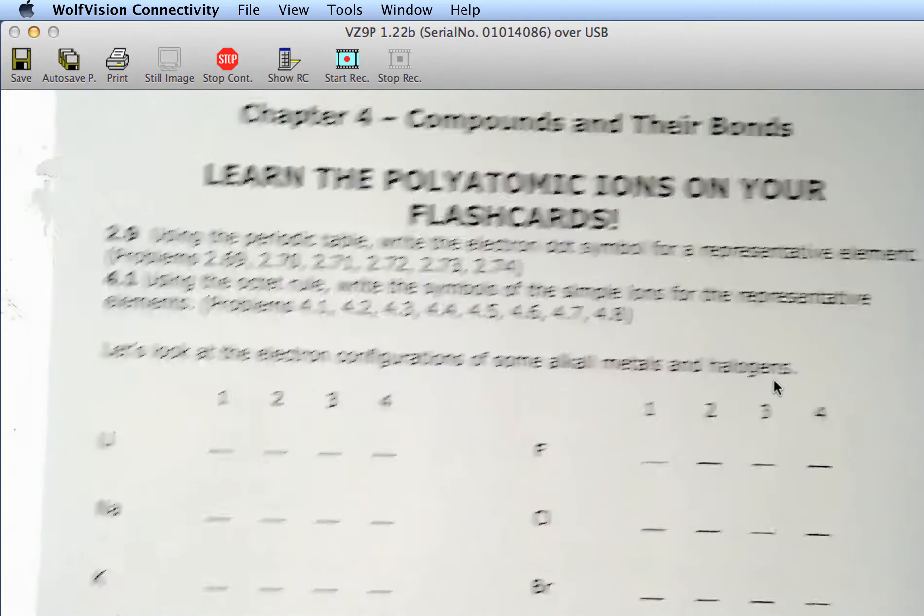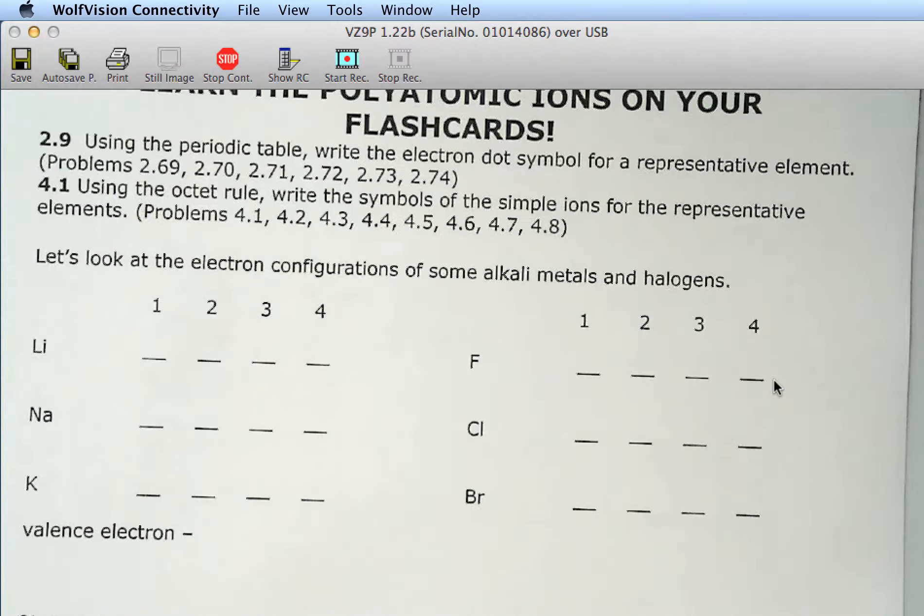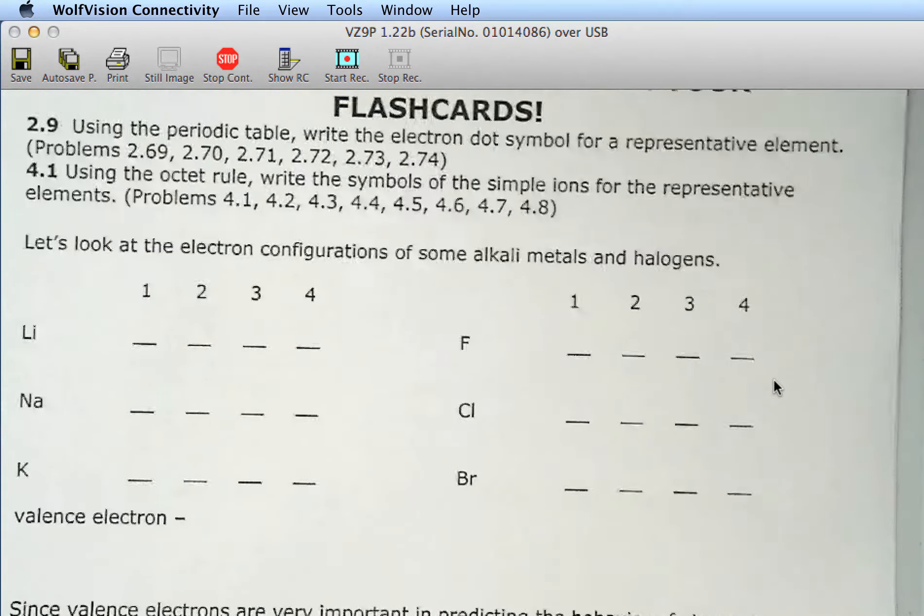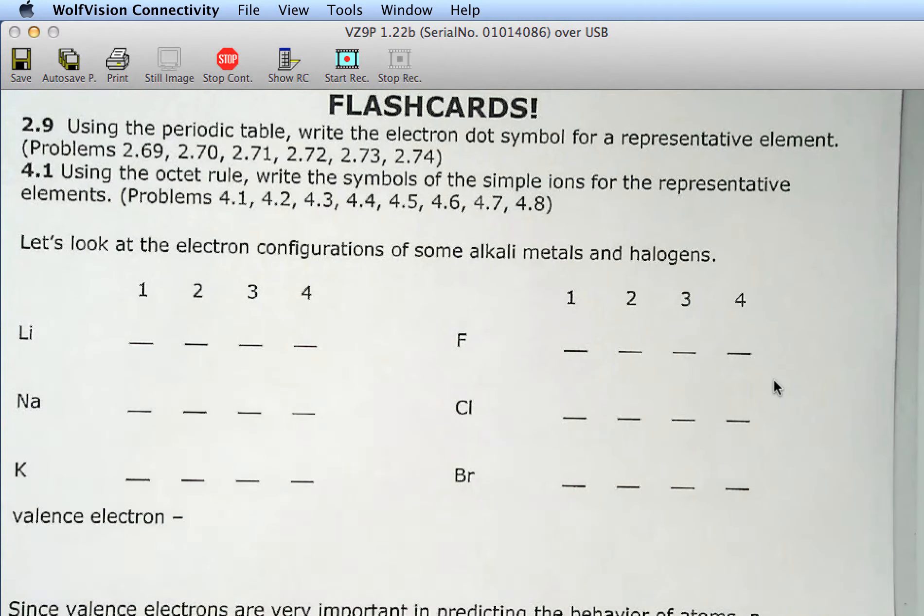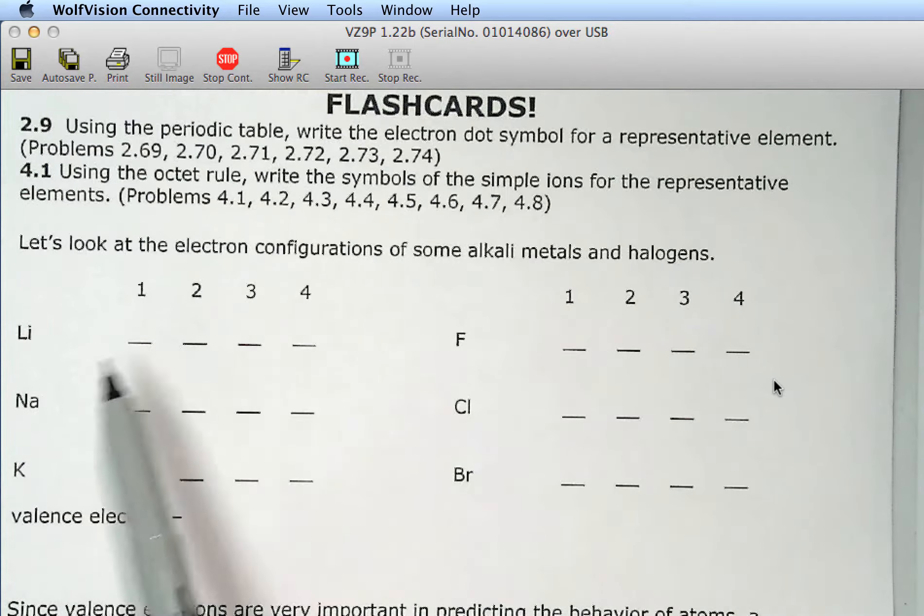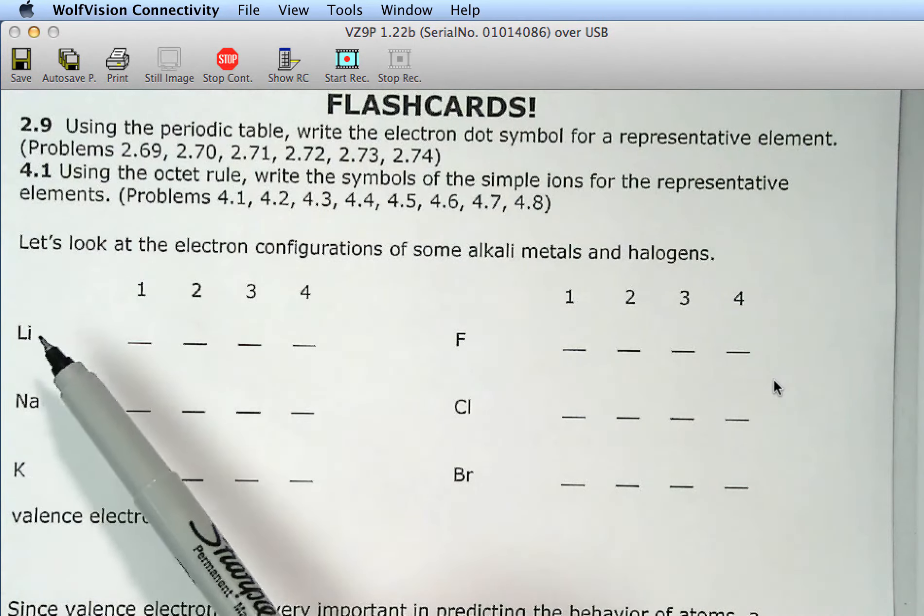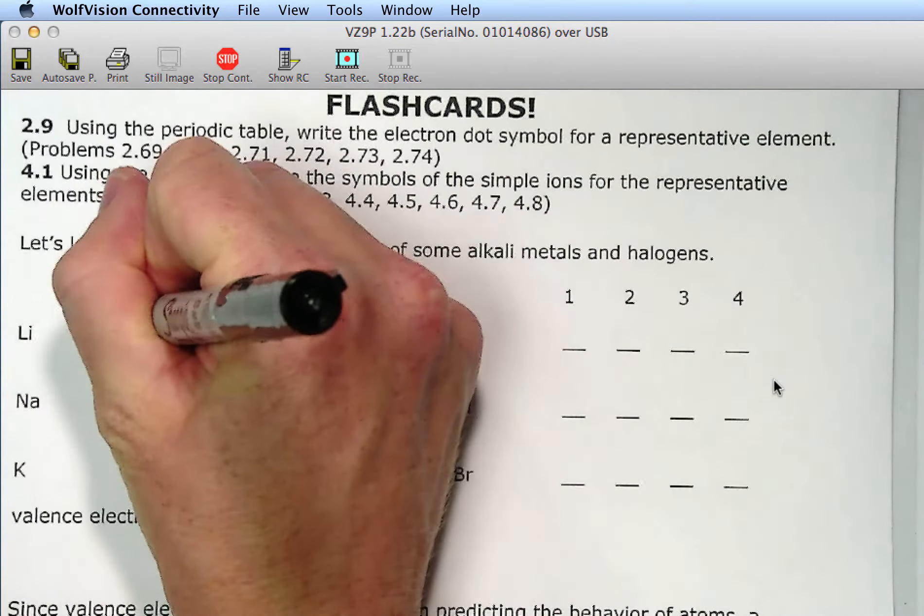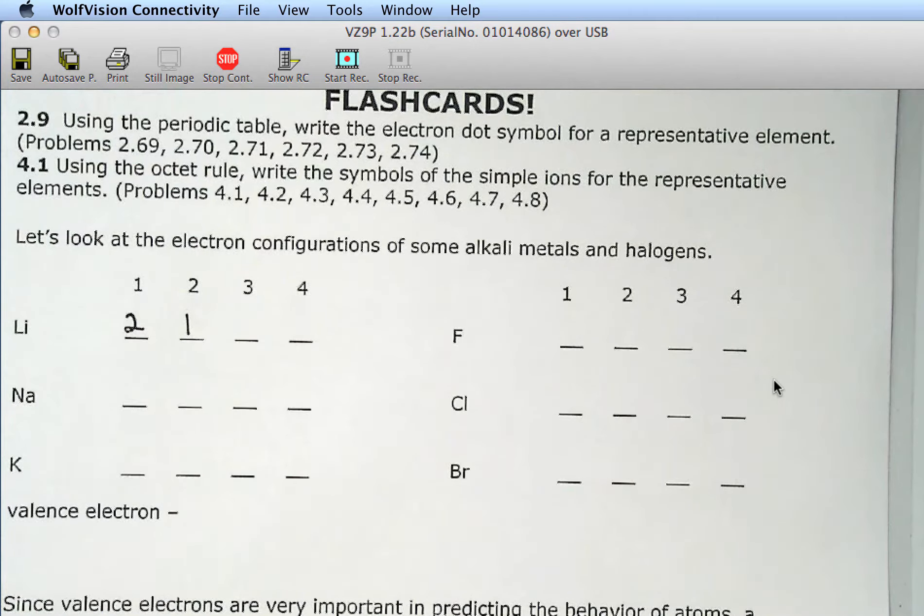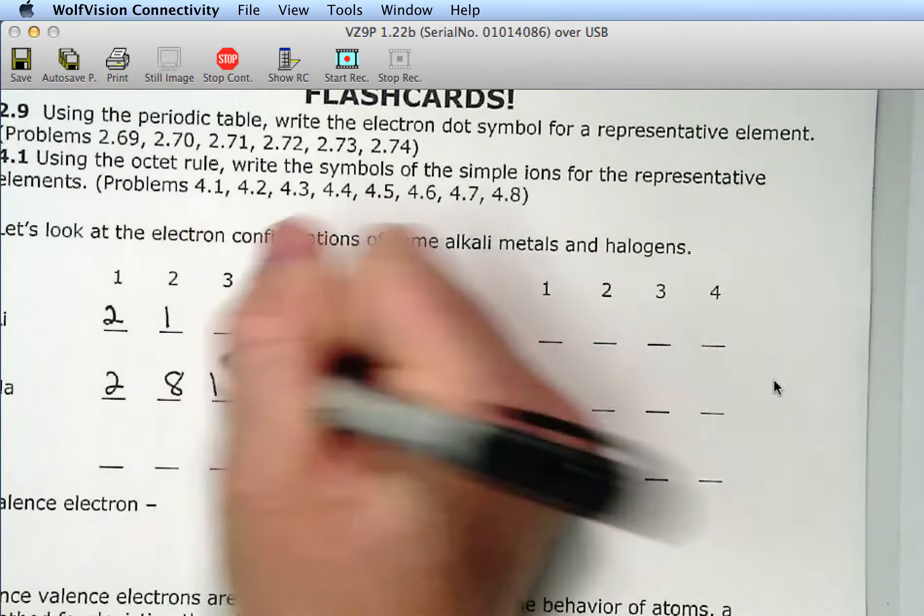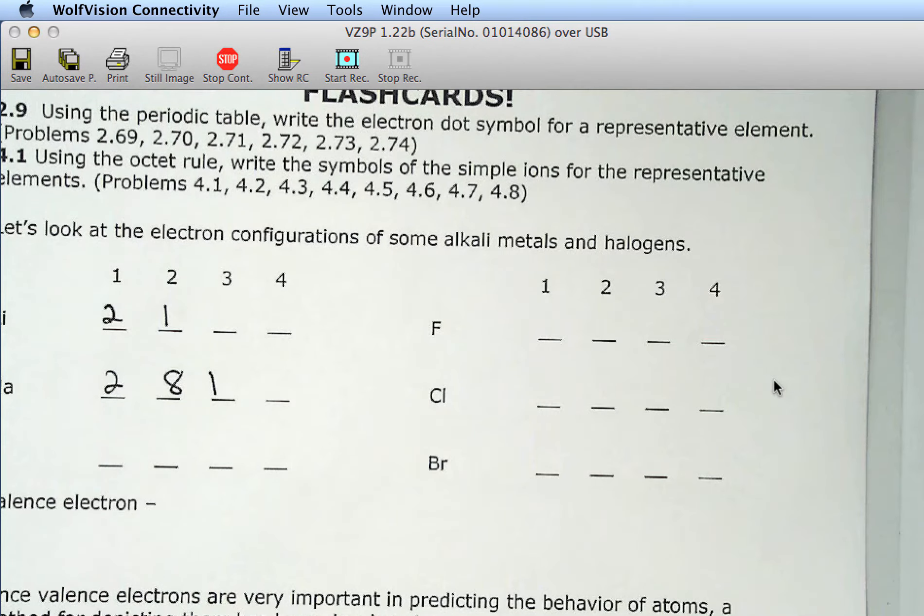So in Unit 2, we're going to talk about the electron dot symbol and we touched on these in Unit 1 actually. So if you remember the electron configurations where you have the electrons parked in certain shells. Let's do that for lithium. What's the electron configuration for lithium? 2, 1. All right. What about sodium? 2, 8, 1. Potassium. So 2, 8, 8, 1 for potassium.